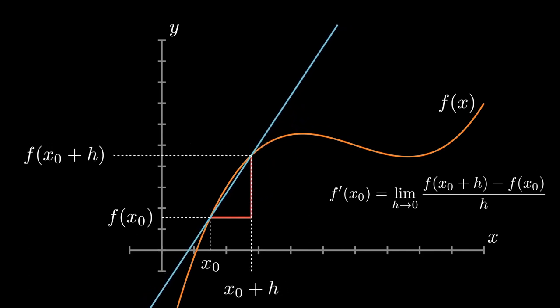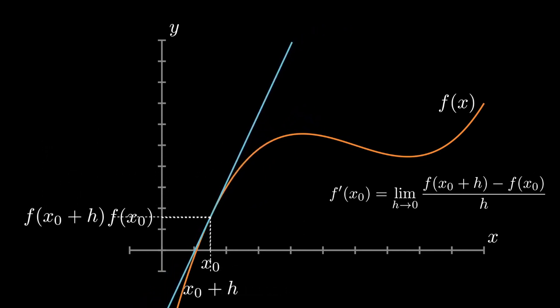The affine map point of view sneaks up on this same definition but without needing secants. Moreover, it connects with some ideas that we've learned about in linear algebra.